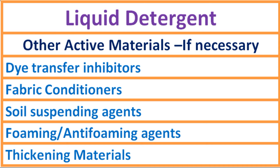We can consider including other active materials in liquid detergent if necessary, depending on the formula and where we are going to use it. Those are dye transfer inhibitors, fabric conditioners, soil suspending agents, foaming or anti-foaming agents, thickening materials, etc.